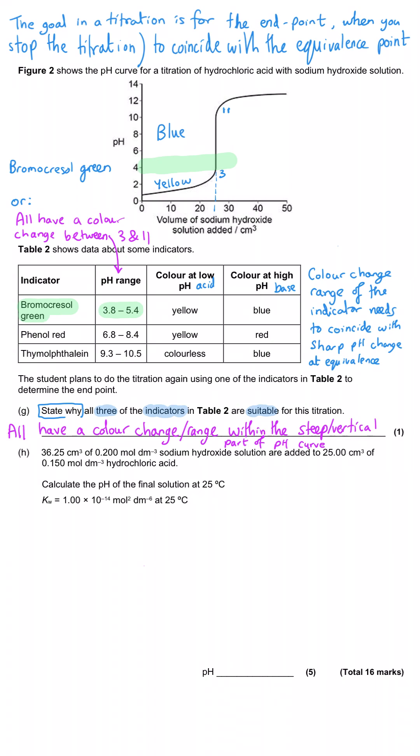Phenol red could similarly be used. This was very obvious that this one can be used because 6.8 to 8.4 is this region here, almost in the middle of the vertical region. Then thymolphthalene, which is like phenolphthalene but not quite the same chemical structure, that is at the very top end of acceptability because it starts to change colour at 9.3 and finishes at 10.5, which is just before this vertical region starts to level out. The safe bet is phenol red in the middle, but since they've told us that all three are suitable, we know that it's all about the fact that they change colour in this vertical region.